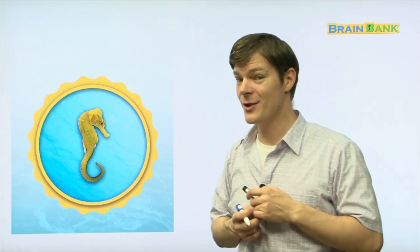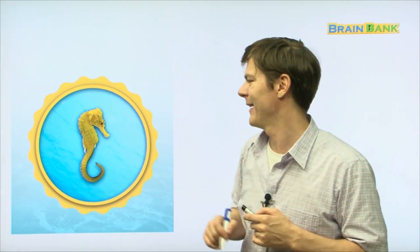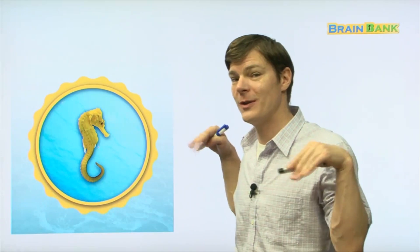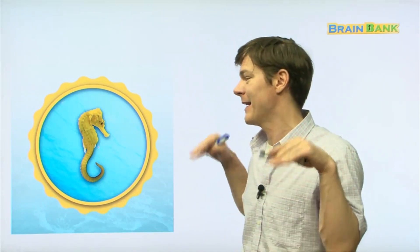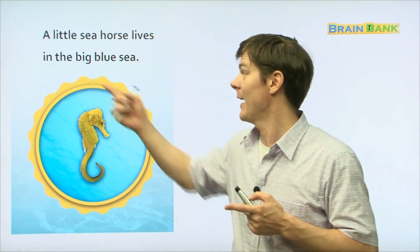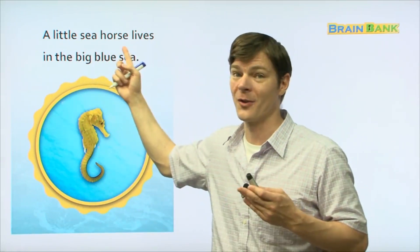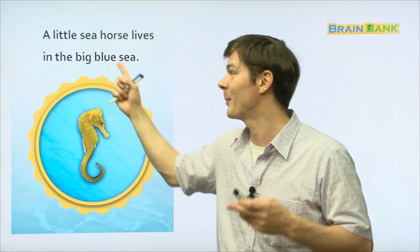And then there's this. Do you know what this is? This is a seahorse. And he has two little fins on the side of his body that help him move through the water. A little seahorse lives in the Big Blue Sea. Everyone repeat with me. A little seahorse lives in the Big Blue Sea.